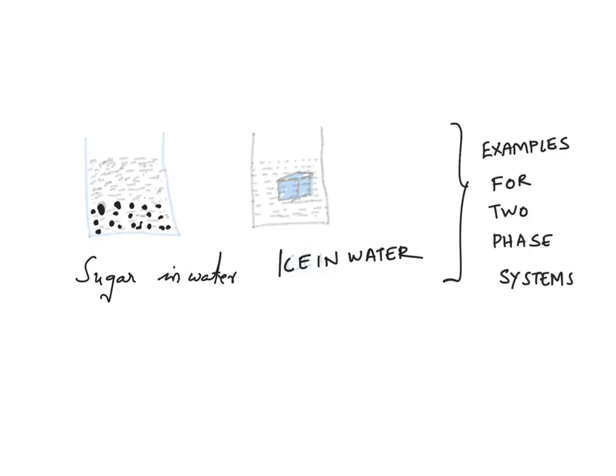Here it is evident that we have got two phases. First phase is the sugar and water solution, and the second phase is sugar alone. Sugar has different chemical characteristics when you compare it with the solution.